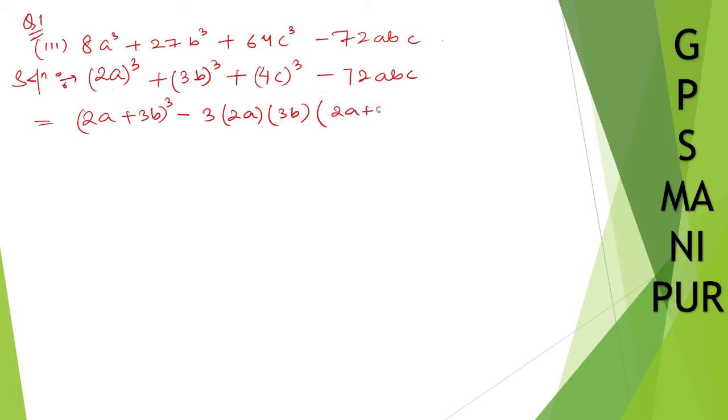So, 2a plus 3b plus 4c whole cube minus 72abc.